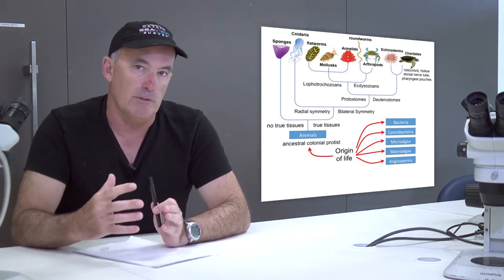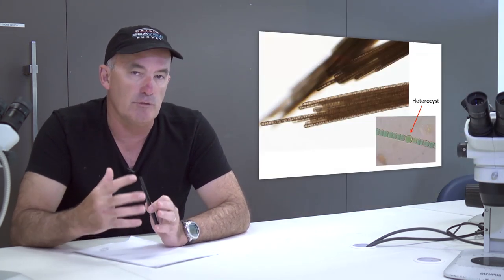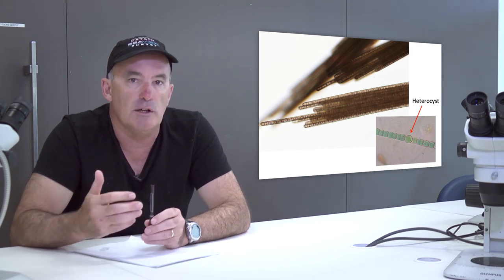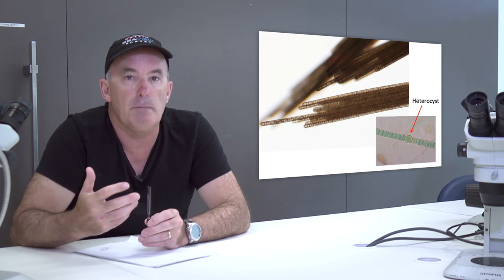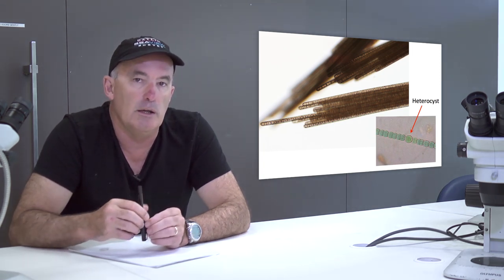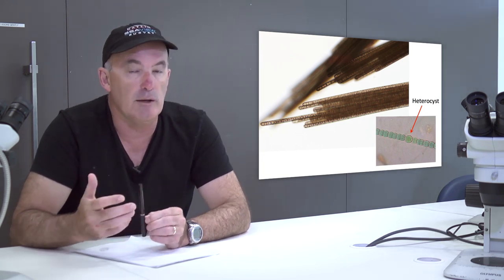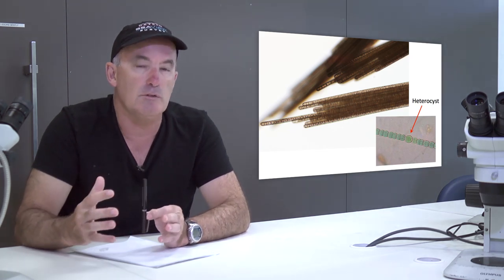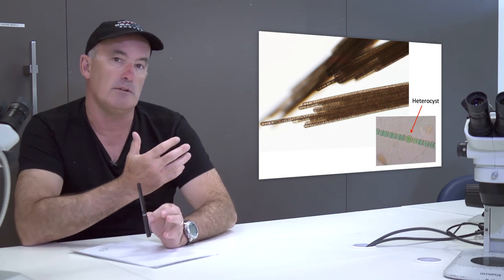One of the simplest organisms found on tropical coastal ecosystems are the nitrogen-fixing cyanobacteria. Despite their simplicity, cyanobacteria are incredibly important to the nutrient budget of tropical coastal ecosystems. They are able to fix nitrogen from the atmosphere using an enzyme known as nitrogenase, which is found in many cyanobacterial species and in large cells known as heterocysts.